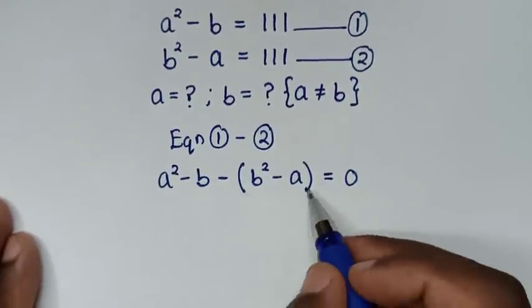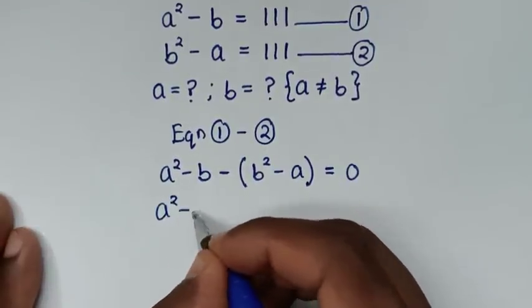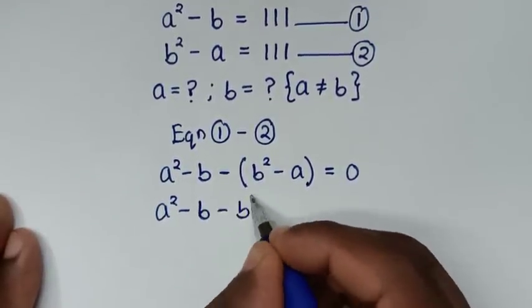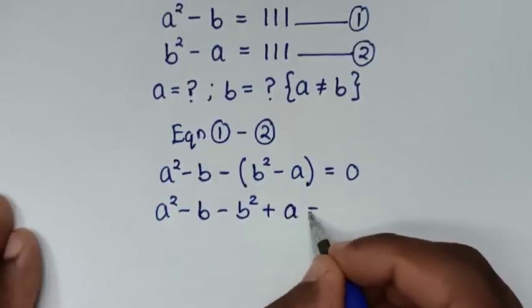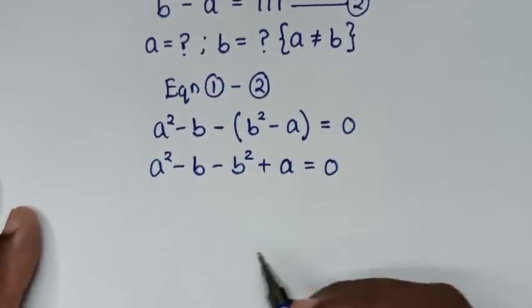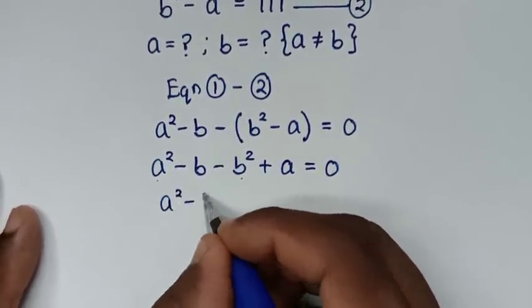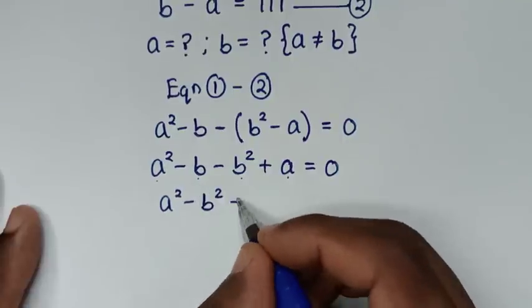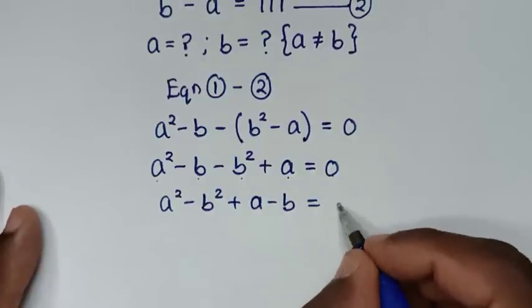We open the bracket using the negative sign. It becomes a² minus b minus b² plus a equals 0. Rearranging, this gives us a² minus b² plus a minus b equals 0.